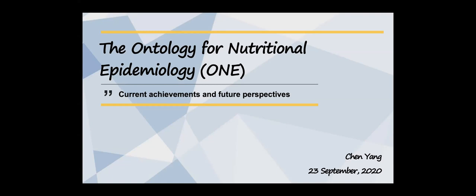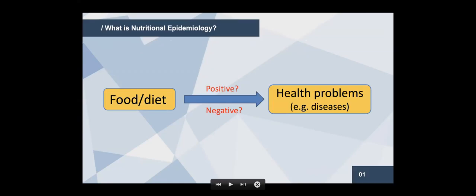Thank you very much for the introduction. Hello everyone, good morning, good afternoon, and good evening. It's my pleasure to share our ontology and get your comments on it. Today I would present the ontology created by our research group, called the Ontology for Nutritional Epidemiology — its current achievements and future perspectives. First of all, in one sentence: nutritional epidemiology is a subject to explore the relationship between food and health problems, whether food would give positive or negative influence on health.